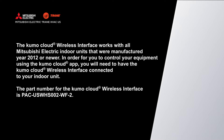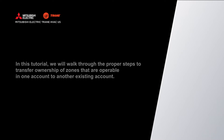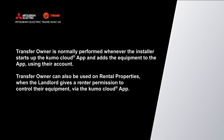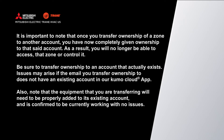The part number for the Kumo Cloud wireless interface is PAC-USWHS002-WF-2. In this tutorial we will walk through the proper steps to transfer ownership of zones that are operable in one account to another existing account. Transfer owner is normally performed whenever the installer starts up the Kumo Cloud app and adds the equipment to the app using their account. Transfer owner can also be used on rental properties when the landlord gives a renter permission to control their equipment via the Kumo Cloud app. It is important to note that once you transfer ownership of a zone to another account, you have now completely given ownership to that account.